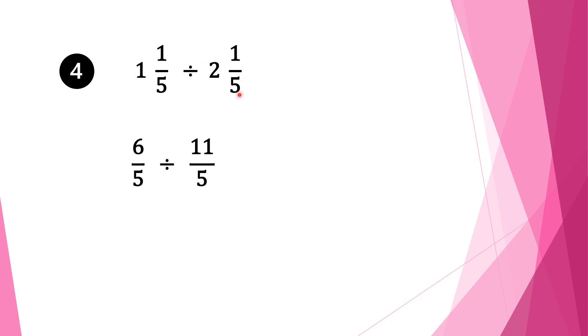Moving on to question 4. We have 1 and 1 over 5 divided by 2 and 1 over 5. Again with mixed fractions, we convert into normal fractions. So 5 times 1 is 5, plus 1 is 6, and we bring our denominator 5 as it is. We bring the division sign as it is. For the second fraction: 5 times 2 is 10, plus 1 is 11, and we bring denominator 5 as it is.